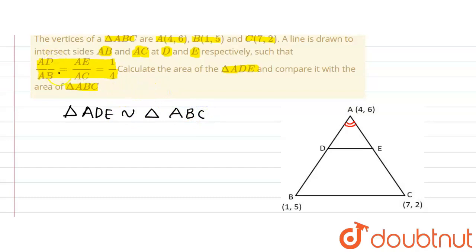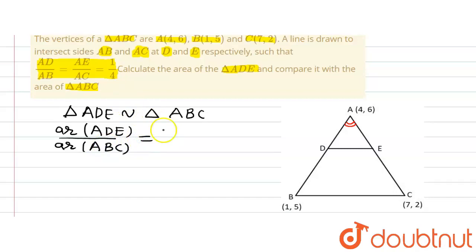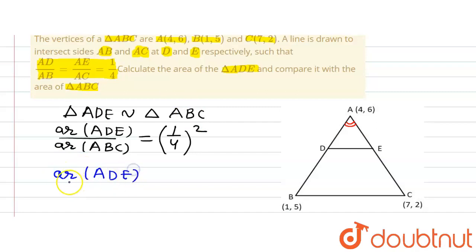Now, if two triangles are similar, we know that the ratio of their areas — that is, area of ADE divided by area of ABC — will be equal to the square of the ratio of their corresponding sides. The ratio of corresponding sides is 1/4, so the square of that ratio gives us area ADE divided by area ABC equal to 1/16.